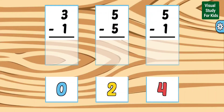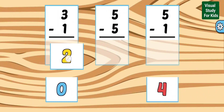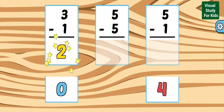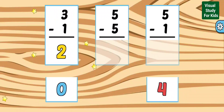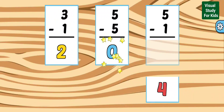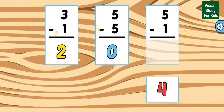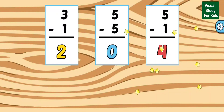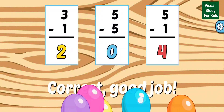Match each equation with the correct answer. 2: 3 minus 1 equals 2. 0: 5 minus 5 equals 0. 4: 5 minus 1 equals 4. Correct, good job.